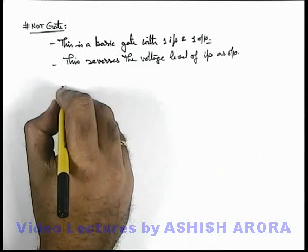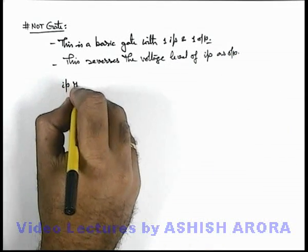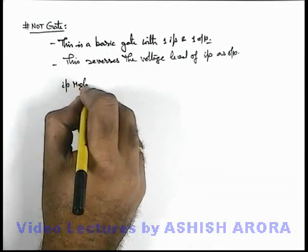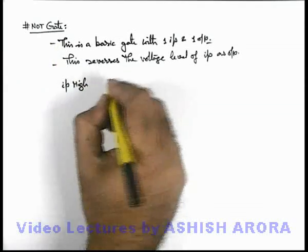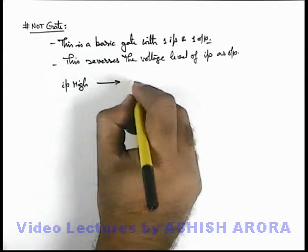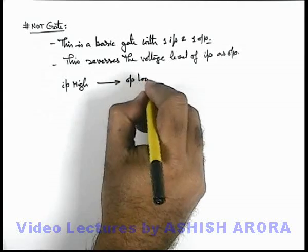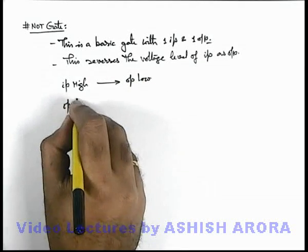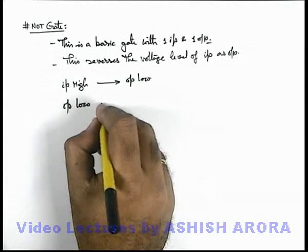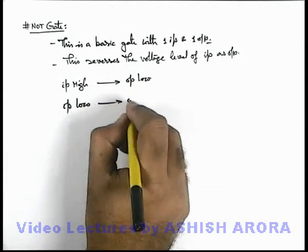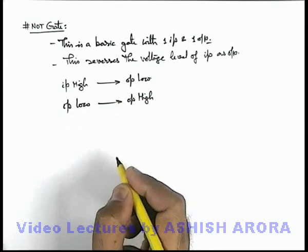For example, if the input terminal is high at the input end of the NOT gate, in that situation the output would be low. And if the input end is at low state, that is at zero state, its output end would be in high state.